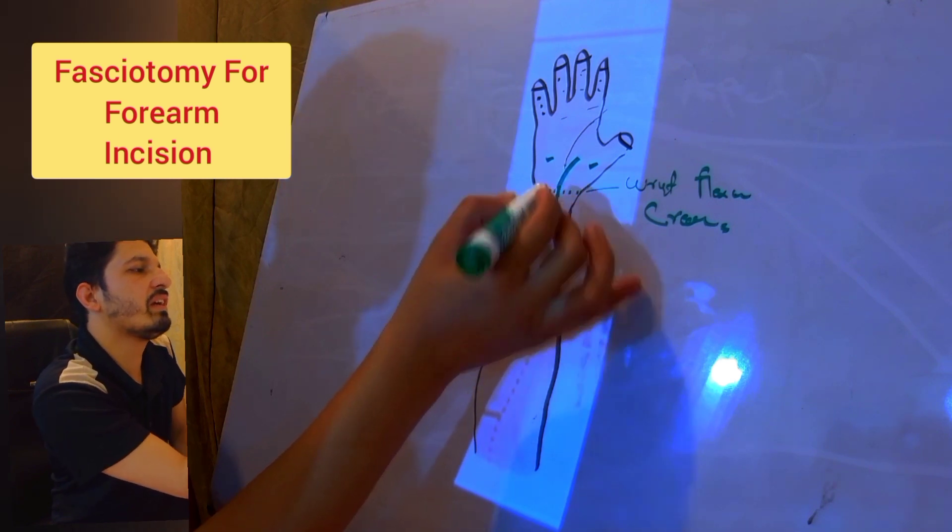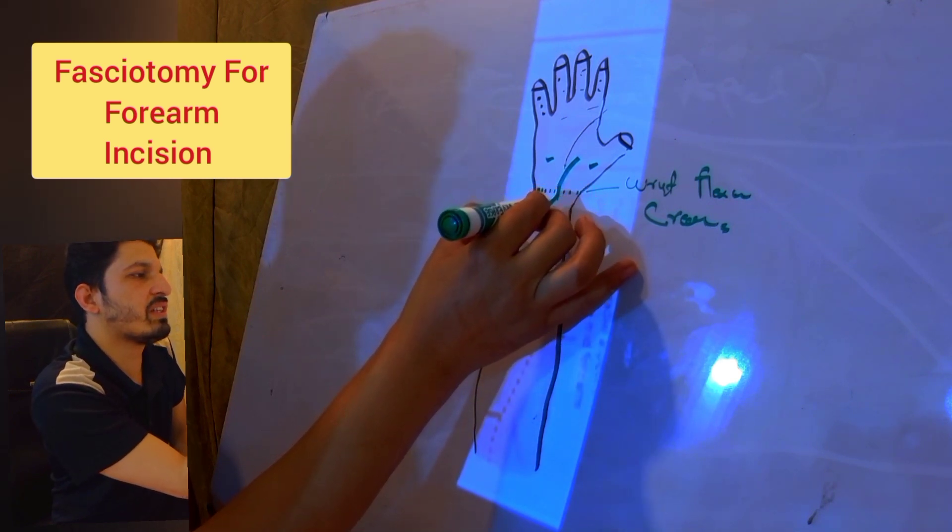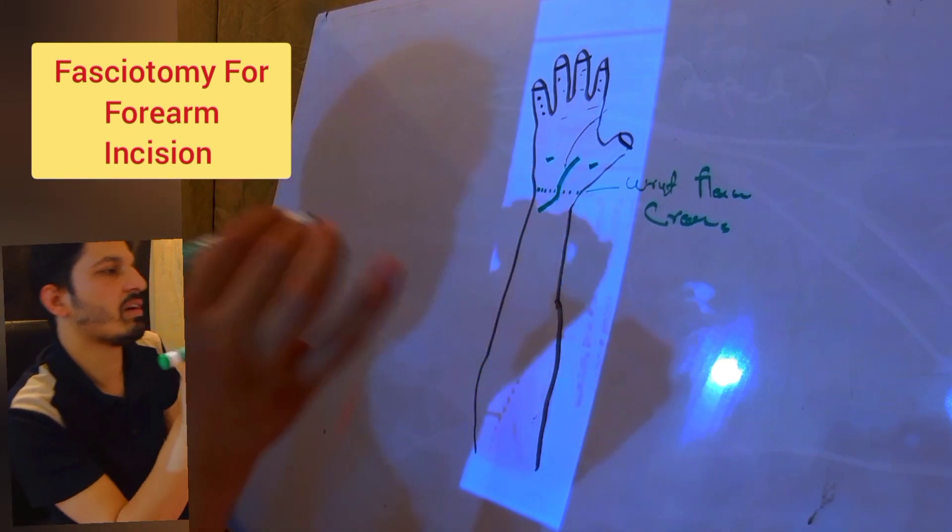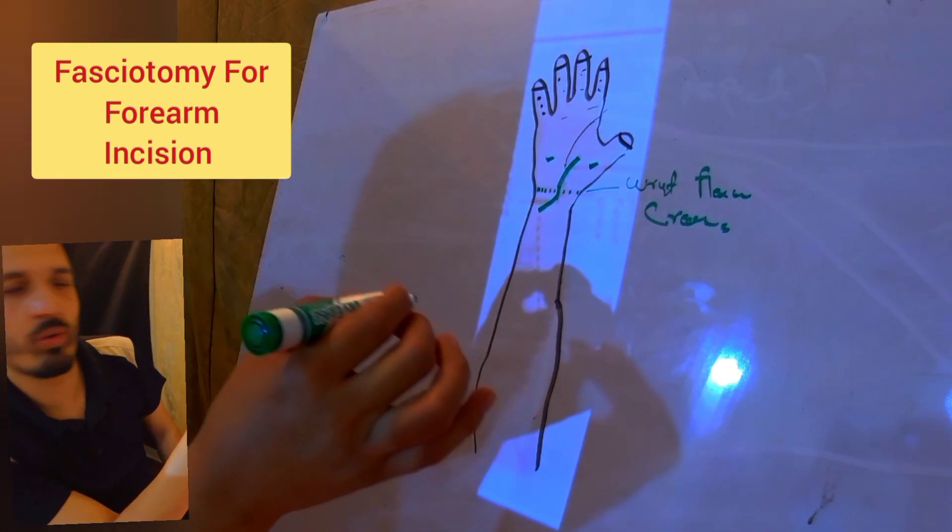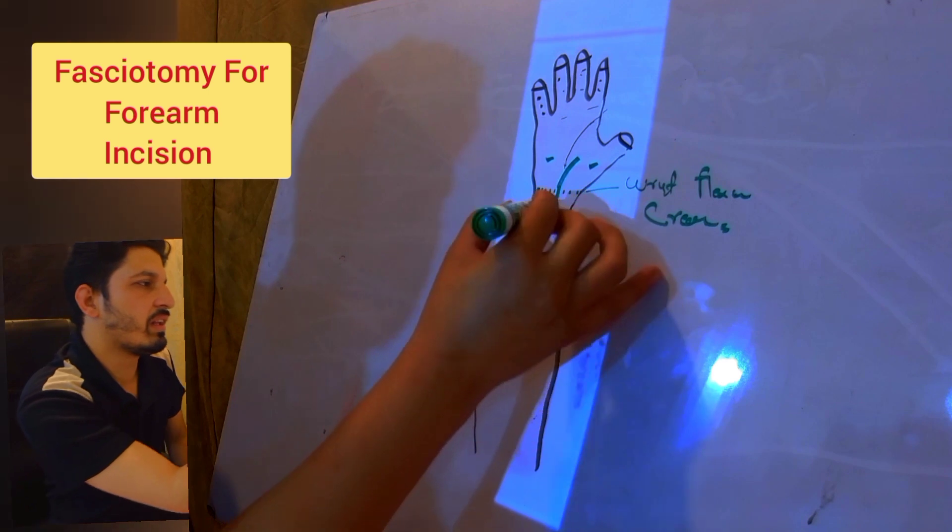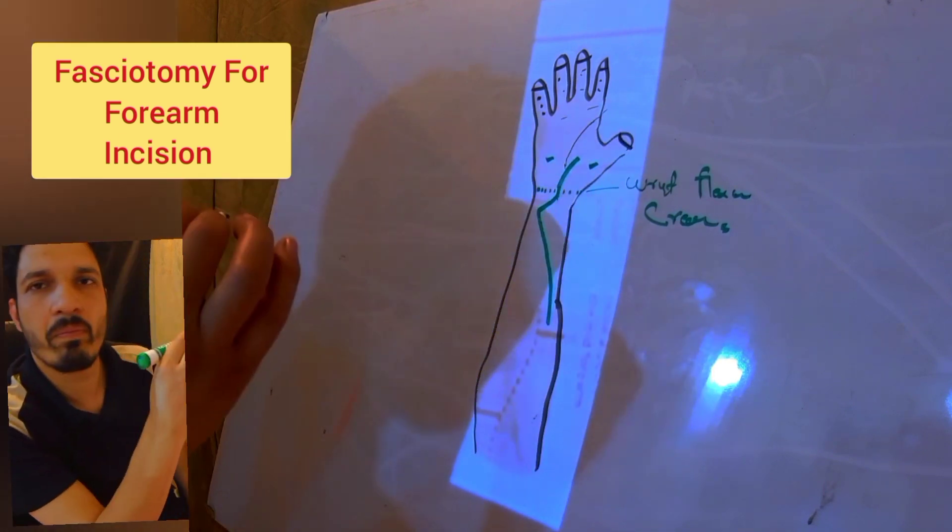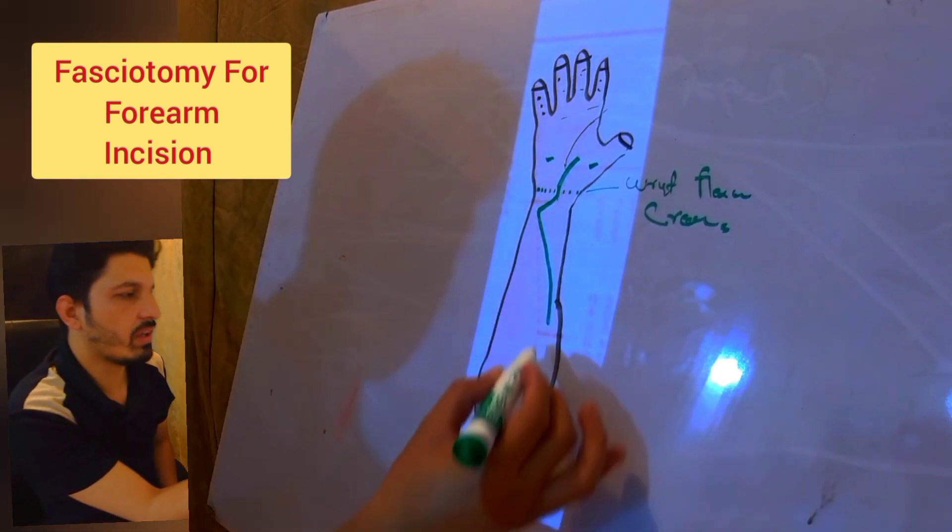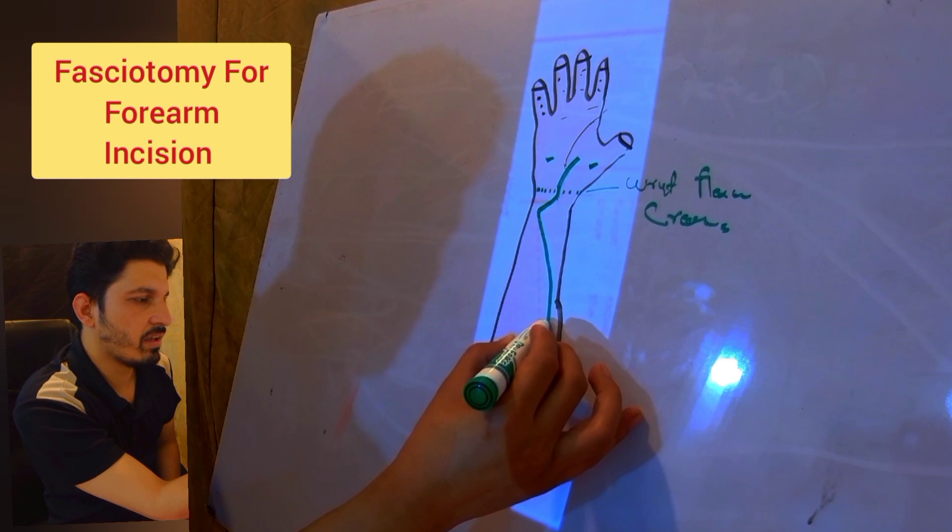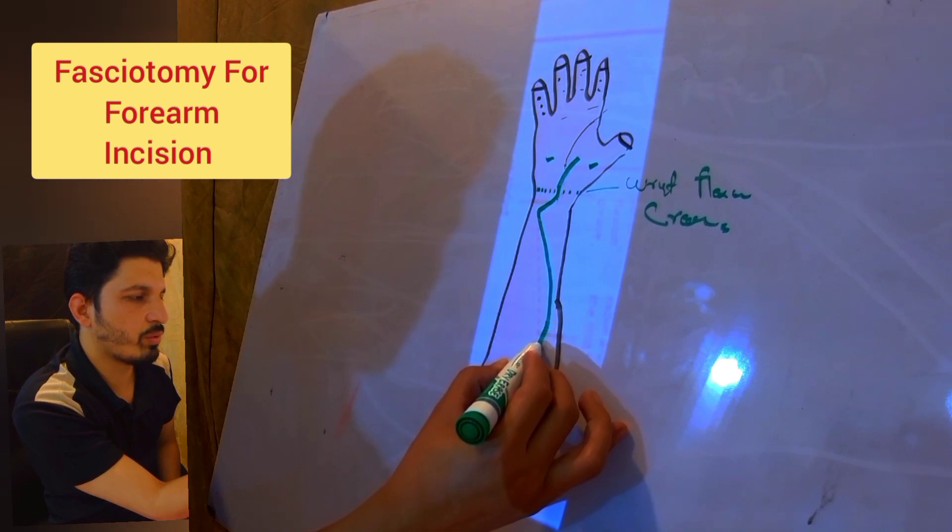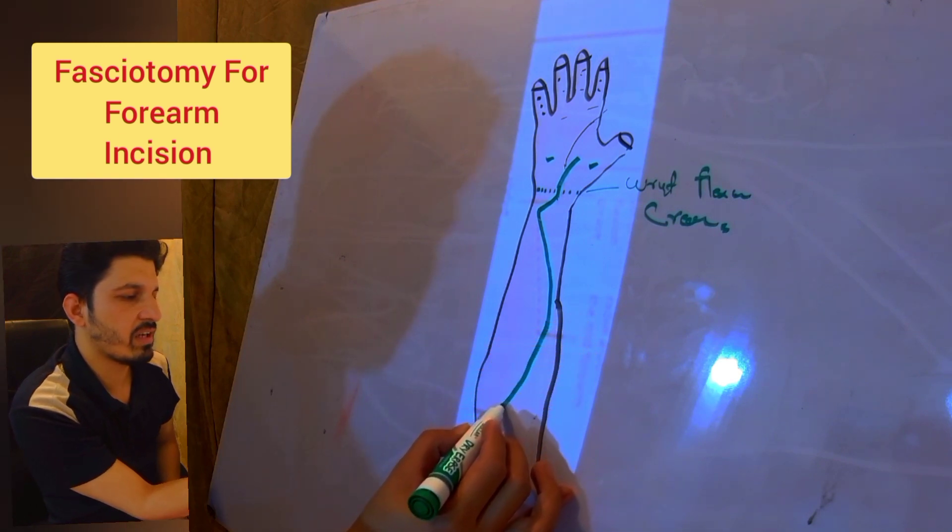Then now it is curving radially towards the radial aspect of the mid forearm, and now it is again curving backward towards the ulnar aspect until the distal aspect of the elbow flexion crease.